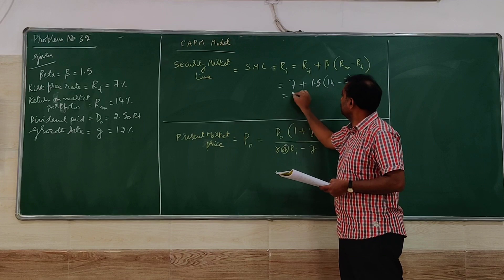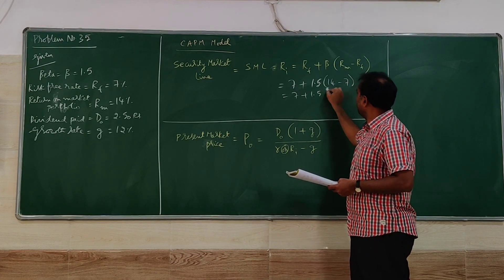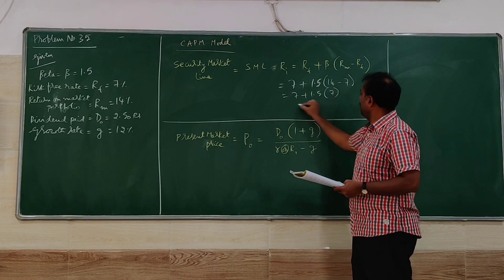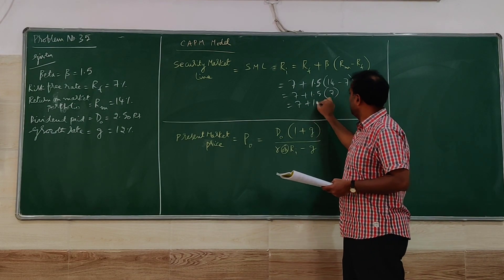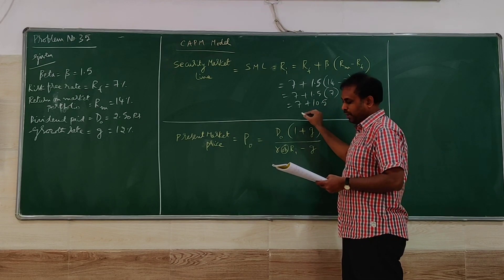Here, 7 plus 1.5 into 7. So 7 plus 1.5 into 7, that comes to 10.5.